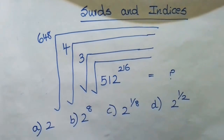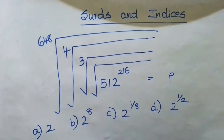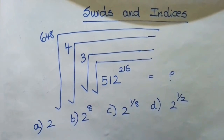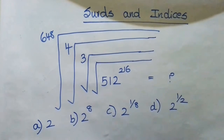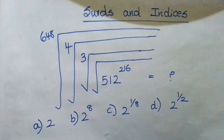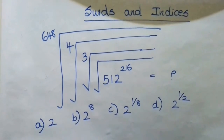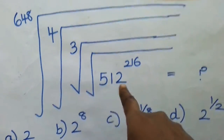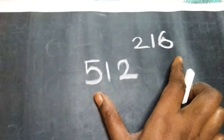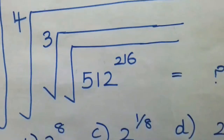Surds and indices. Inside the number, we will try to get the number. So, root under the number 512 to the power 216.